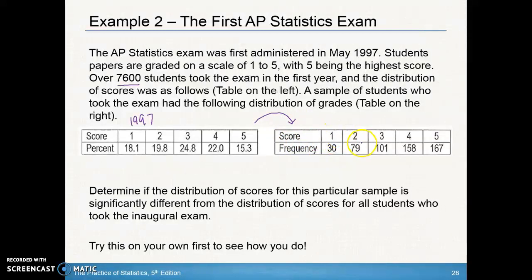And this is the number of students that got a one, number of students that got a two, number of students that got a three. Determine if the distribution of scores for this particular sample is significantly different from the distribution of scores for all students who took the inaugural exam. So let's go ahead and see how you did on this question.